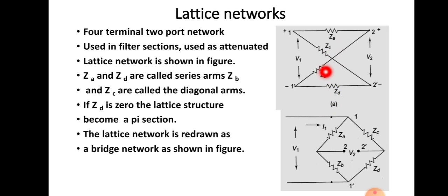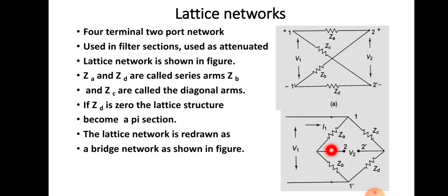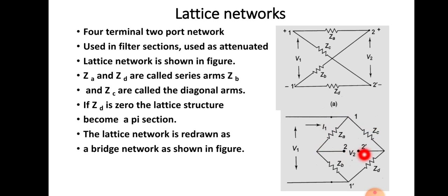Here, V1 is the input port voltage at terminals 1 and 1-dash, and V2 is the voltage across terminals 2 and 2-dash. This same network can be redrawn like a bridge structure, where 1-1-dash is shown on one side and 2-2-dash on the other, with the different impedances arranged accordingly. V1 and V2 are marked, and we will make the analysis of this lattice network using this bridge network.